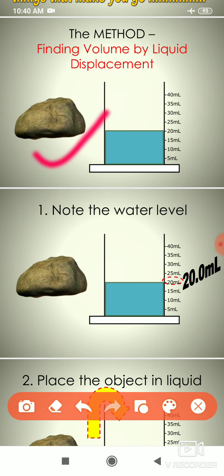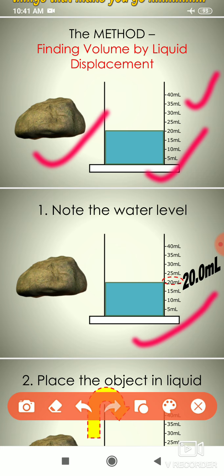To find the volume of the irregular shape, we take a beaker or glass which has ml markings — 5 ml, 10 ml, 15 ml, 20 ml, 25 ml. We fill water to a known level in the beaker. Suppose the beaker is marked 5, 10, 15, 20 ml, and 20 ml of water is already filled.